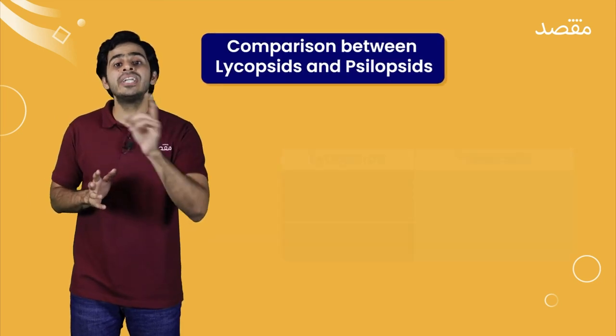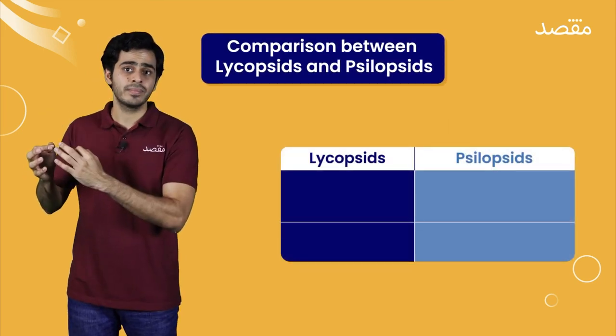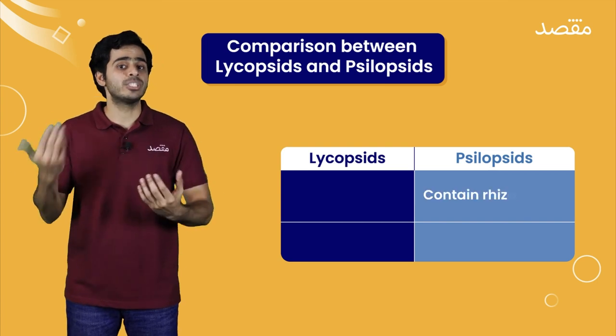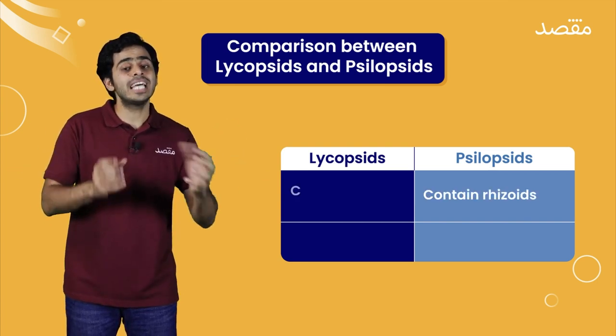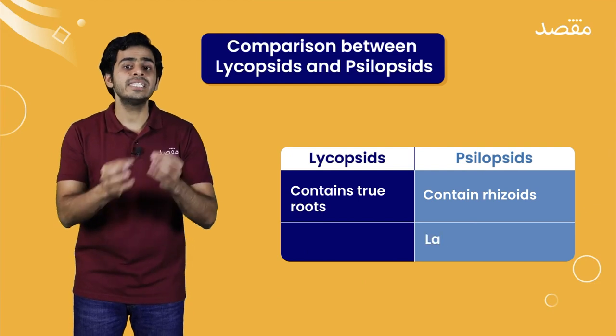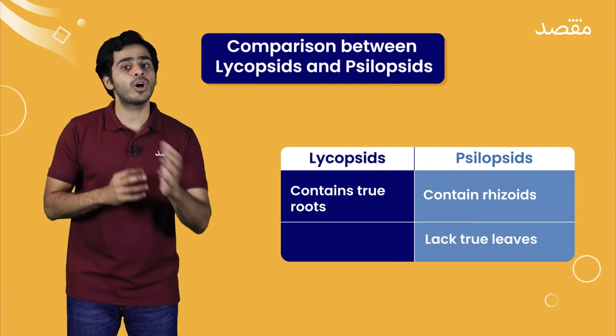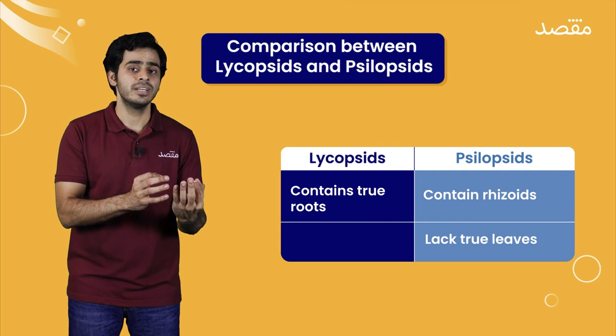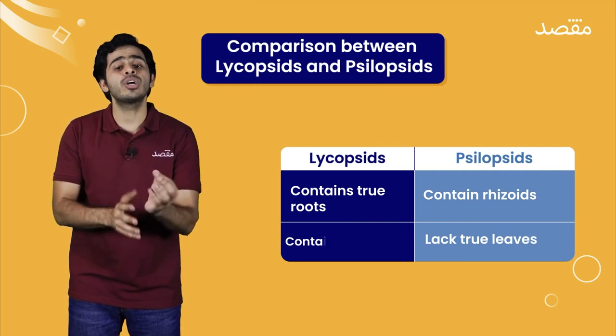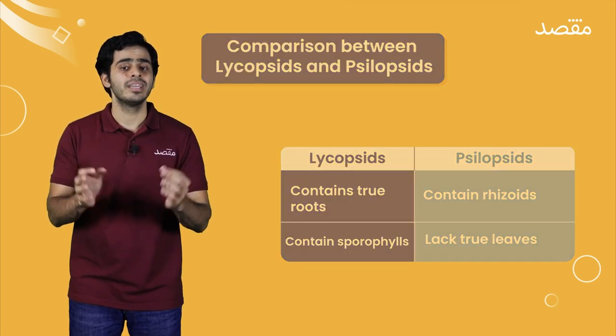Haan doh guys, yeh thi general characteristics of lycopcida. Just a recap, ke lycopcida are different from sylopsida. Sylopsids have rhizoids, while lycopcids have true roots. Sylopsids lack true leaves, while lycopcids have true leaves, which bear sporengia and are called sporophylls. I hope you are totally familiar with this subdivision and understand it well. See you people in the next video.